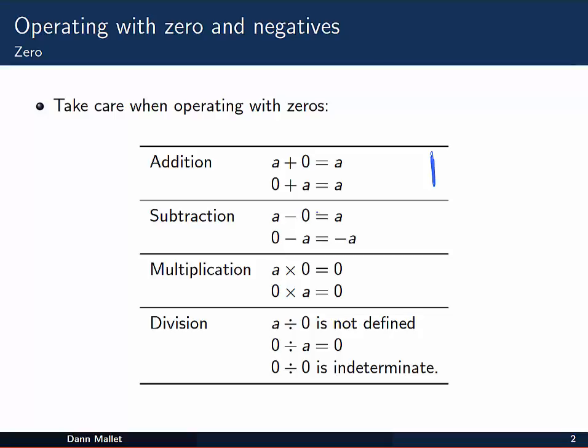Subtraction: a minus zero doesn't change anything because you are taking nothing away. But if you reverse the order, zero minus a, you end up with the negative version of the number you are taking away. Not a big deal, but something to keep in mind.